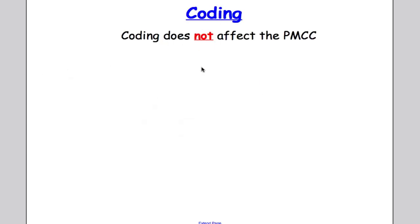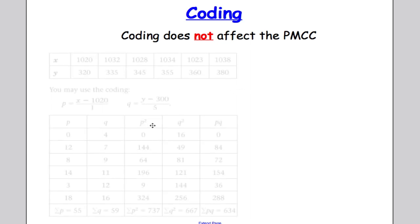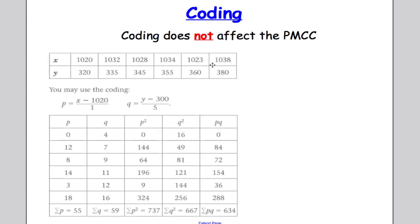Okay, and that's it for understanding what r means. The next thing we have to look at is coding, and the most important thing to know is that coding does not affect the PMCC whatsoever. So if you code a set of data, I'm just going to show you now, we code the set of data and then work out the PMCC. That will give you a value for r which will perfectly represent the data set.